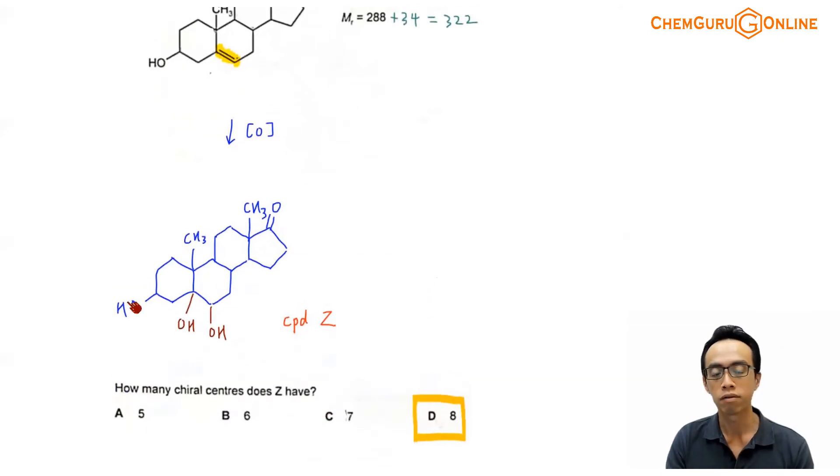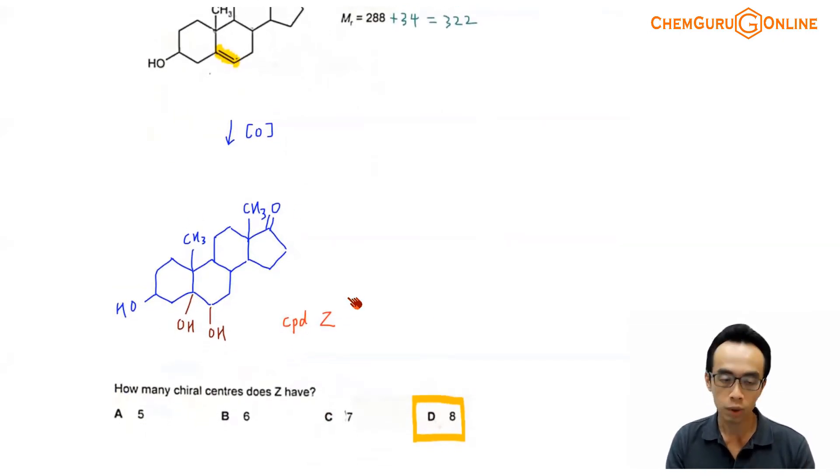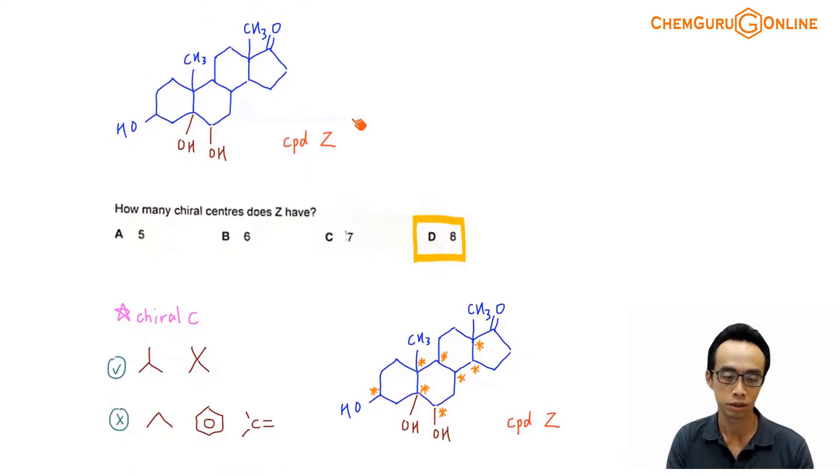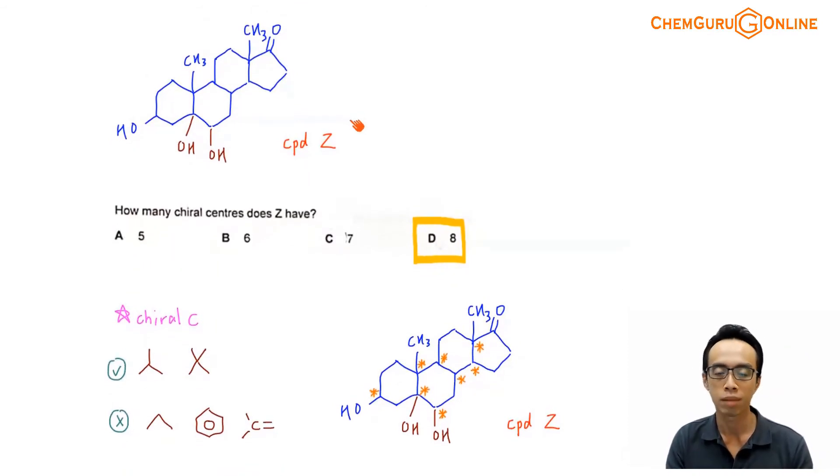And once I have this product Z, then what I can go through is I can consider how many chiral carbons or how many chiral centers does my Z have. Now, this is fairly straightforward. This idea, actually, it is linking to Intro to Organic Chem, looking out for chiral carbon.